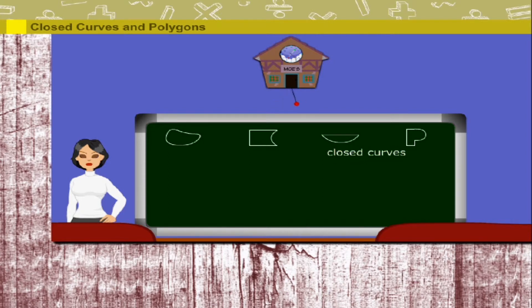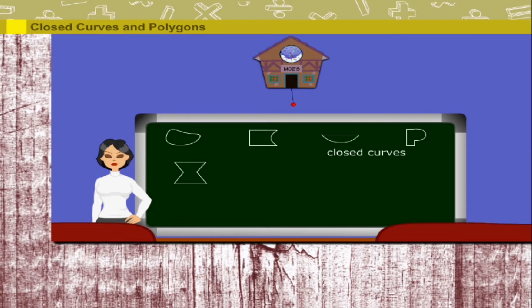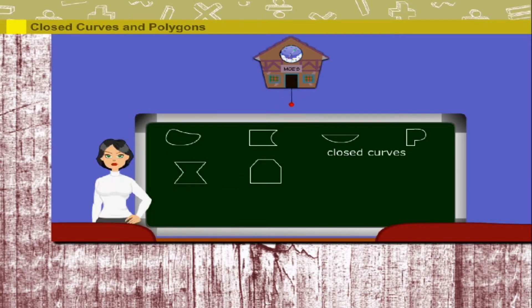Lucy ma'am draws two more shapes. These are made up of line segments and have no curved sides. They are called polygons.